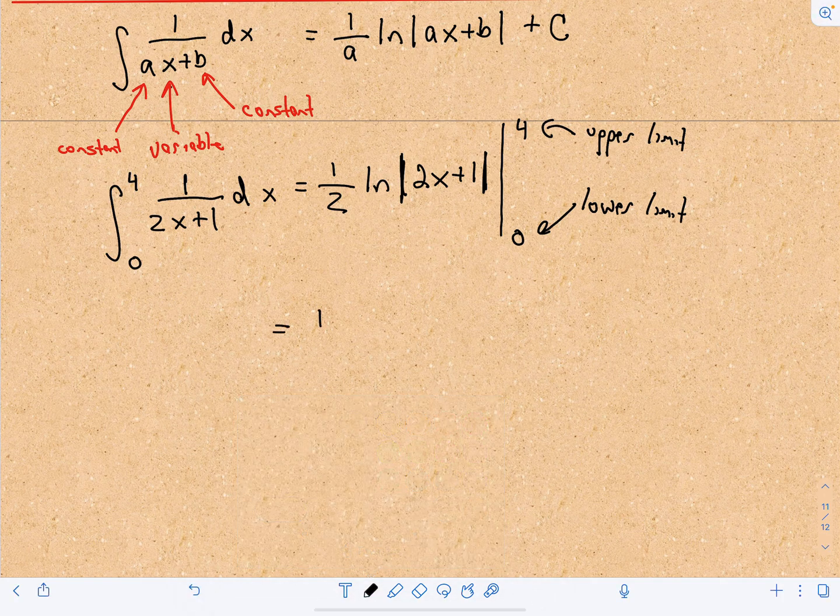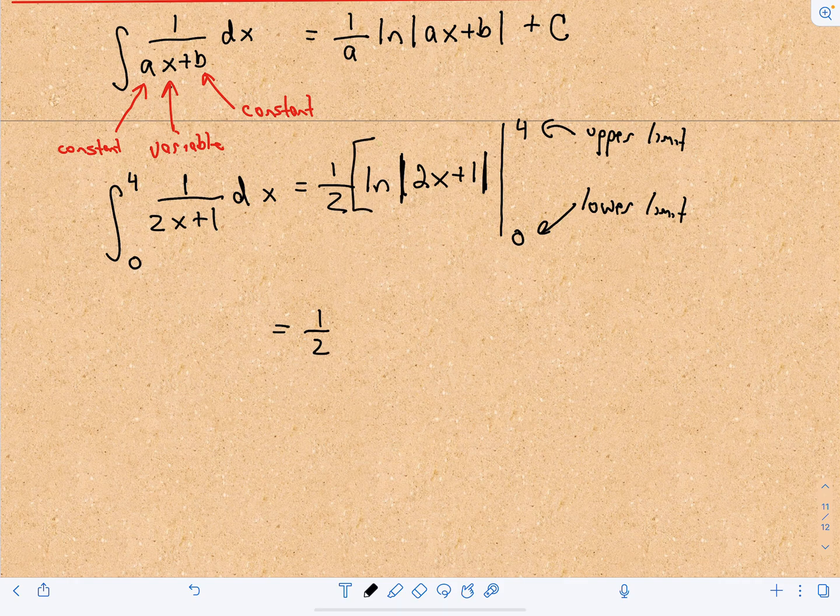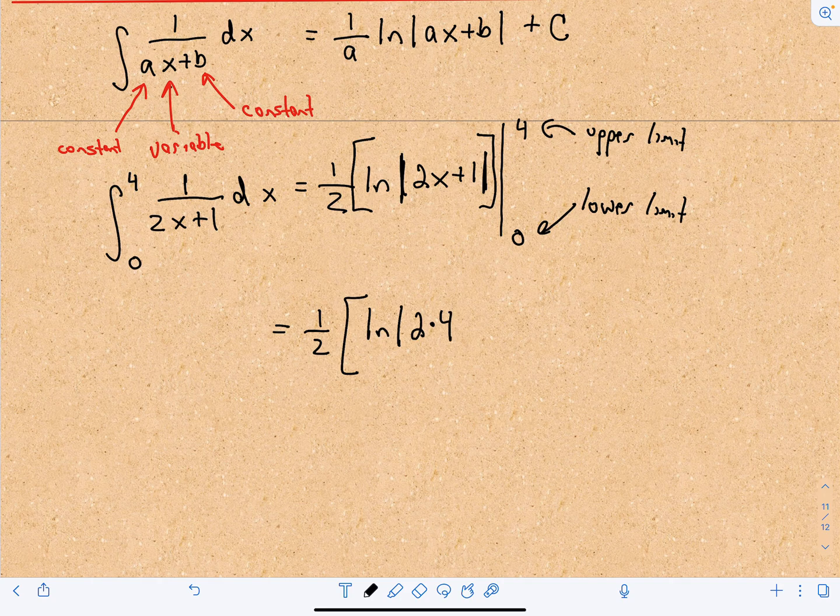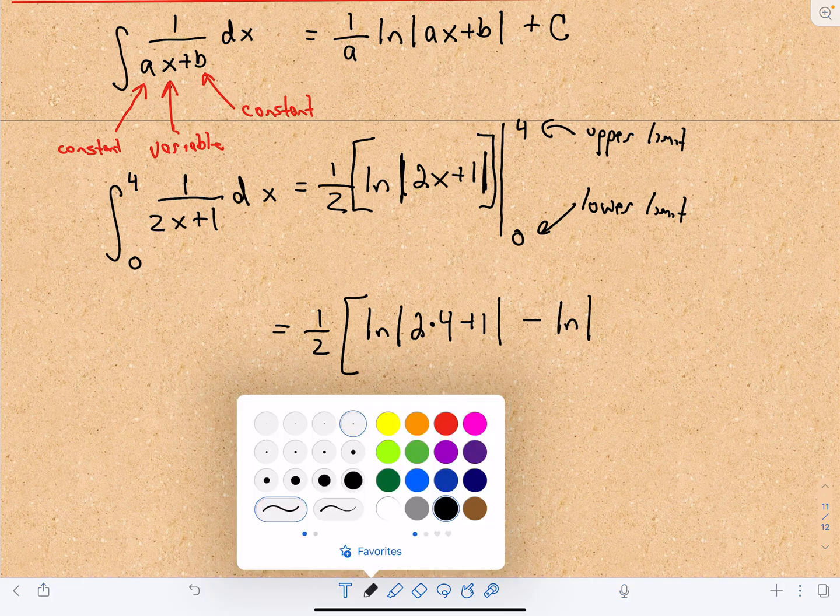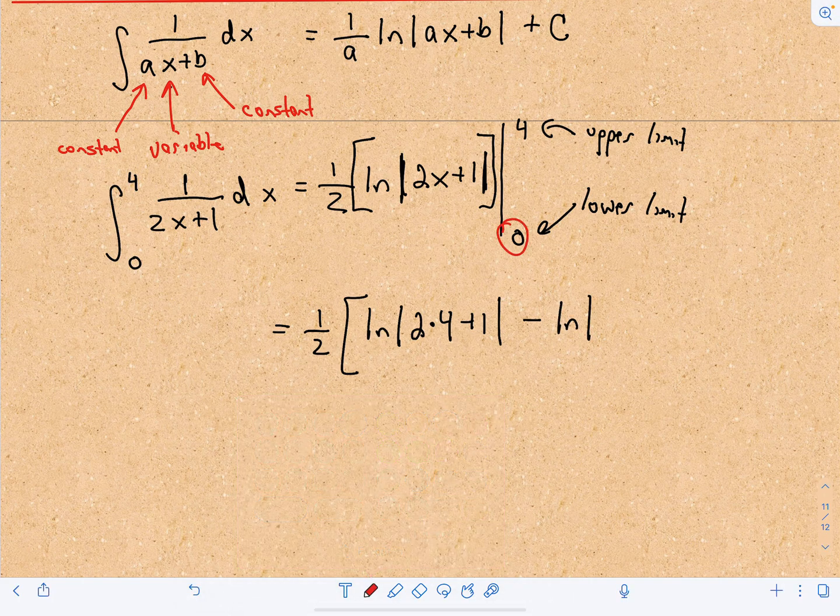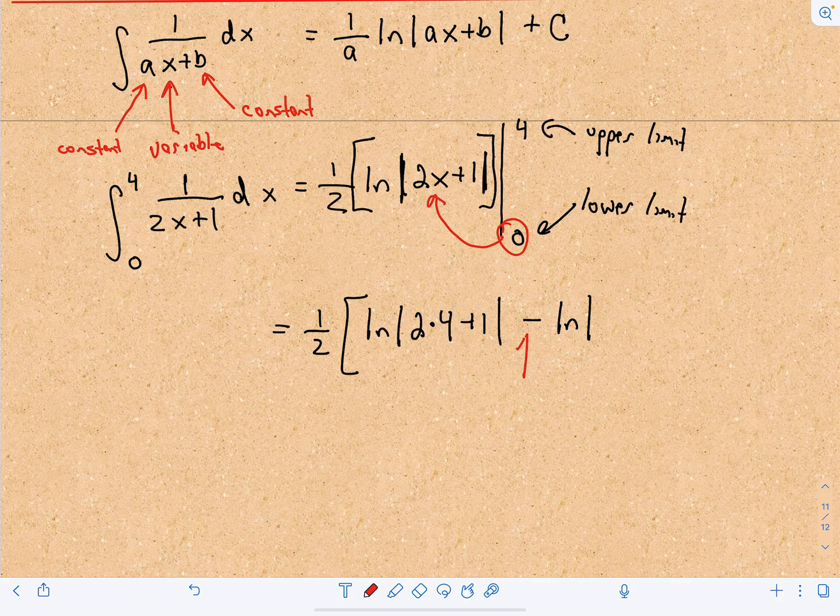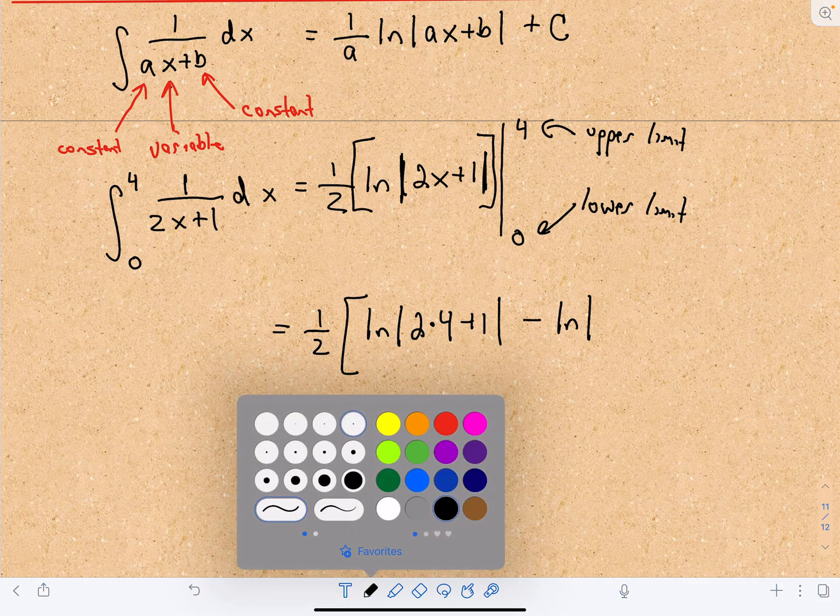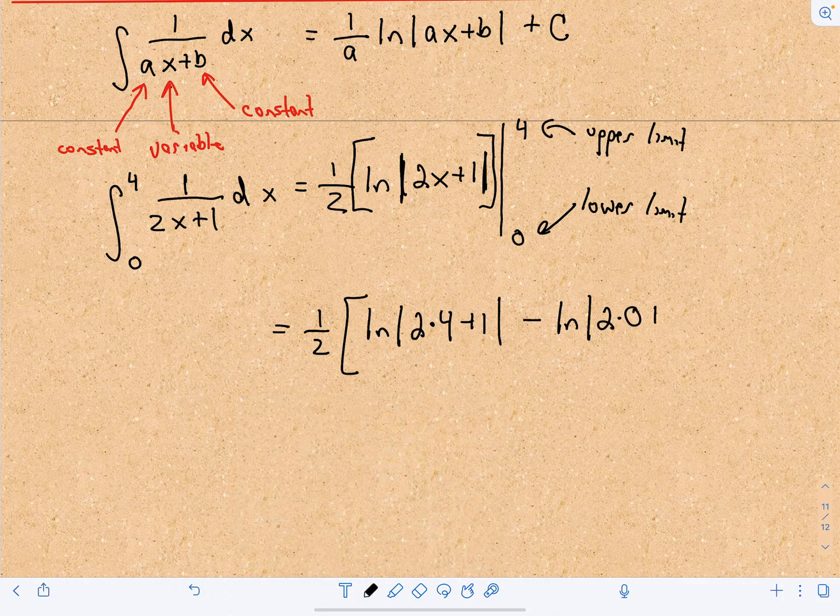First we plug in our upper limit of integration for x. So I'm going to get 1 half, and I'll put this in brackets. We can do the 1 half at the end. So 1 half of ln of 2 times the upper limit, which is 4, plus 1, minus the natural logarithm. Now we do the same thing with our lower limit. Recall there's always a minus sign when you do this type of definite integral. So I'm going to plug in 0.